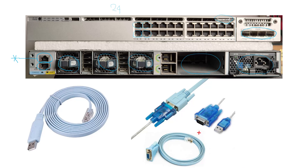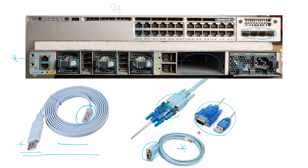We use a console cable to connect to this port. The newer models of console cables have one side RJ45 and the other side USB. But if you have one of these older models, the connector is a DB9 connector. You can buy a converter that connects it to a USB. Then you connect these two sides to each other, and at the end you will have something with one side USB and the other side RJ45. Either one of these options is okay.